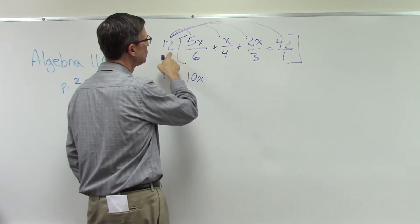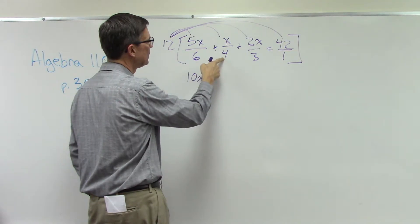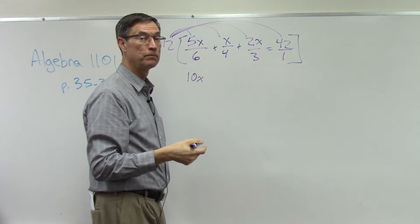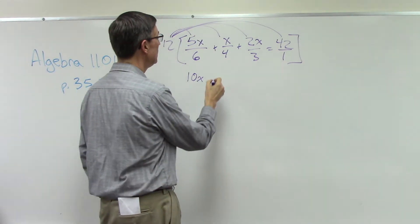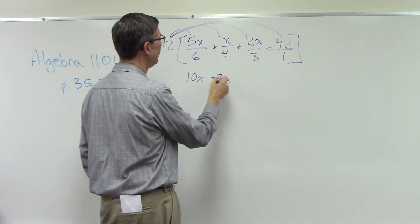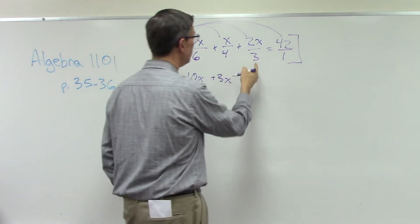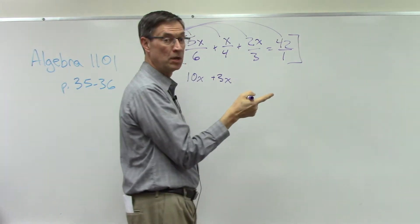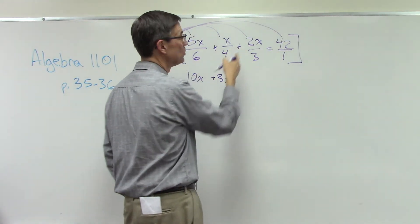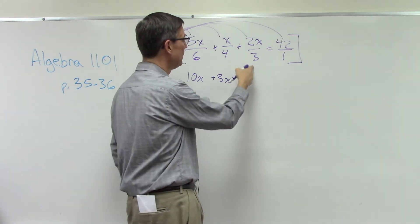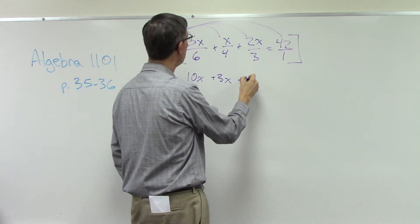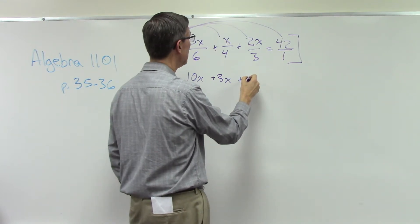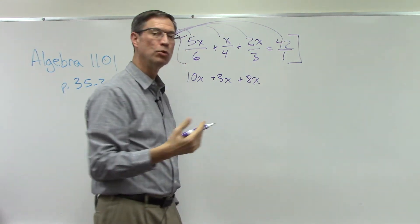Let's try that with the next one. 12 cancelled against the 4 would give you 3, so plus 3x. Let's go a little further. 12 cancelled against the 3 is 4, but now I've got to multiply that 4 times the 2, which should give you 8. I could do 12 times 2 is 24, take 24 and divide by 3. Either way we get the 8, so 8x.